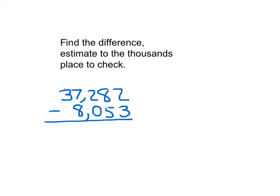Here we're asked to find the difference. So that's the exact answer. And then it says to estimate to the thousands place to check. So as before on the previous screen we had just subtracted to find that exact answer. Now the difference here is 2 minus 3. We can't do that. We need to regroup. The 8 becomes a 7. So the 2 can become 12. Then we can work in that ones place. 12 minus 3 is 9.